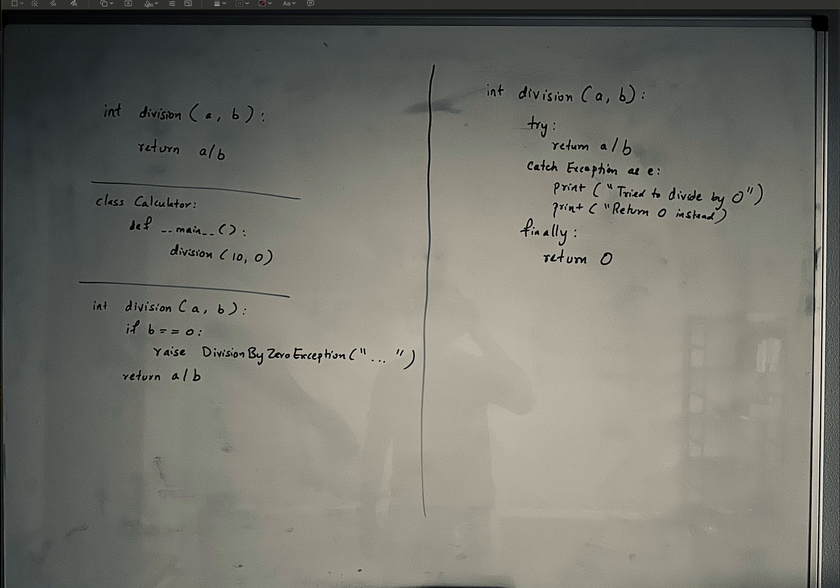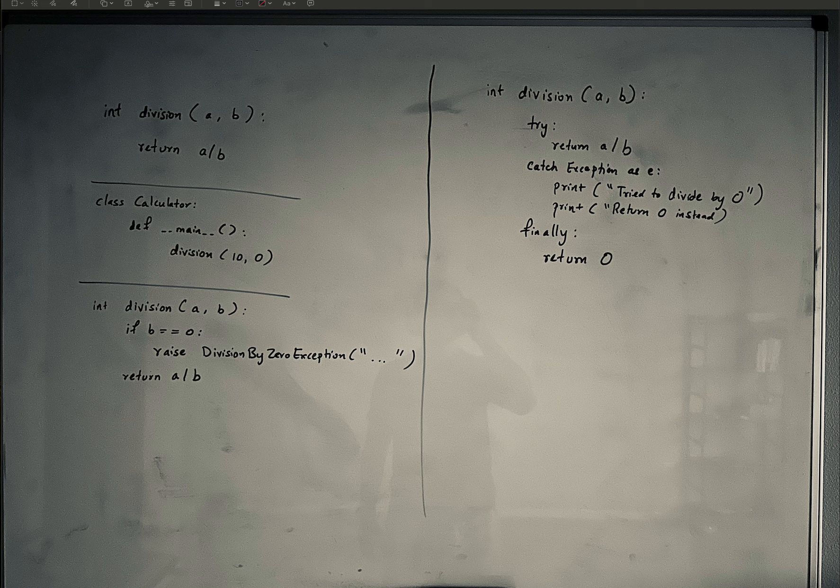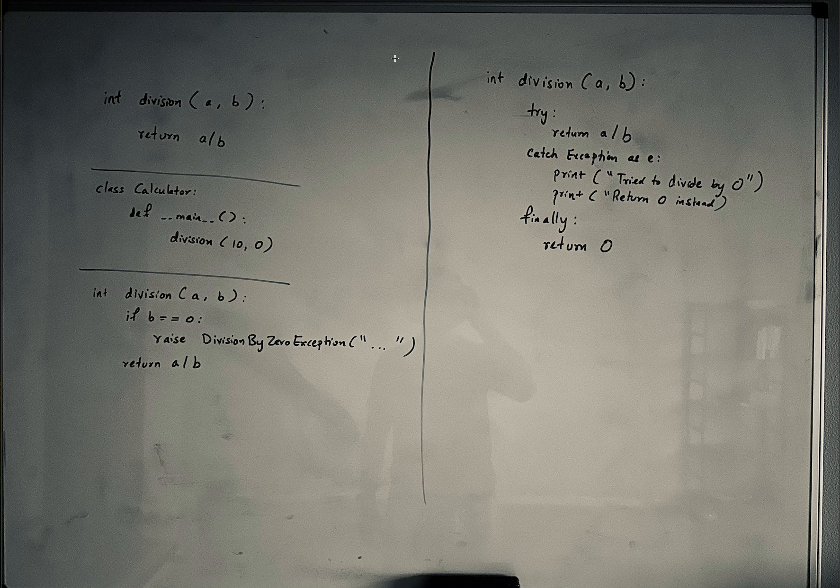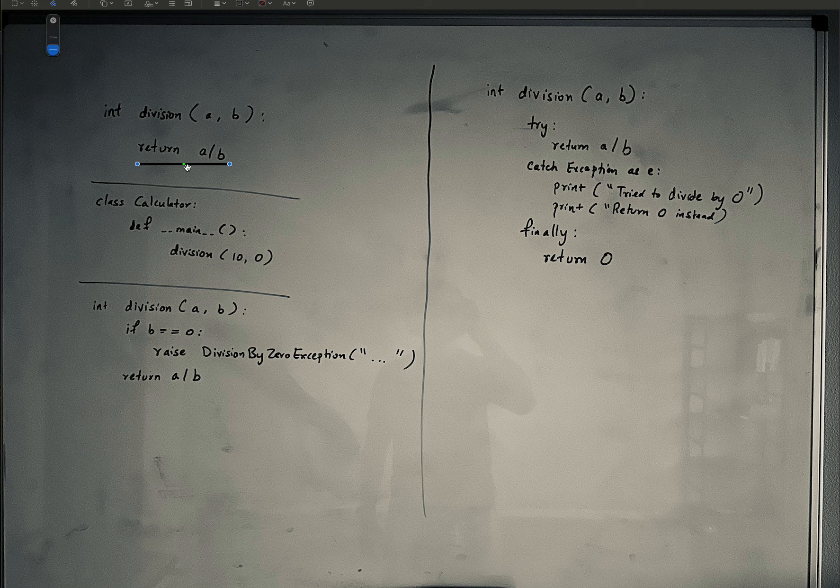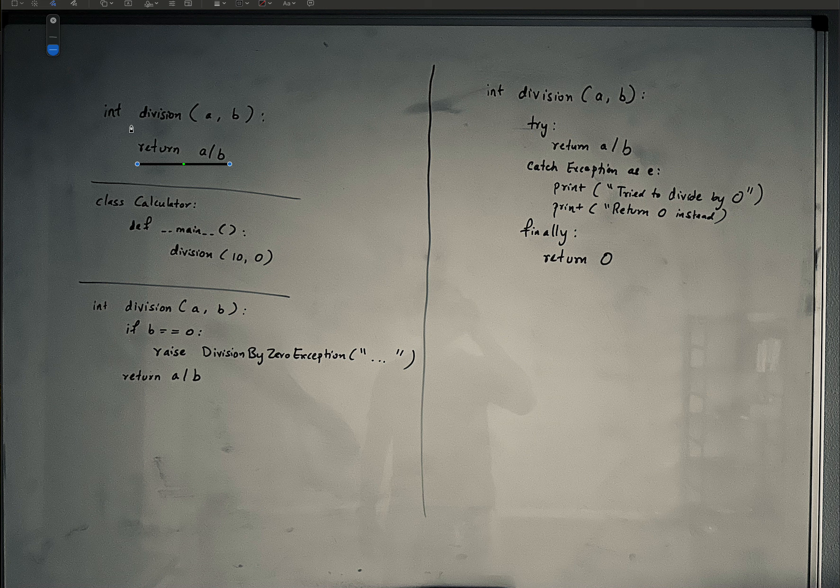What does it mean to raise an exception? In this code, the first block is very tightly defined where it says you just divide a and b. Now when a and b are divided, it could give a division by zero exception.